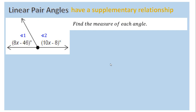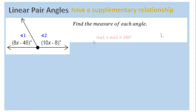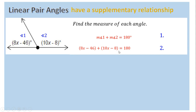Let's start with linear pair. Linear pair angles have a supplementary relationship. In this example, angle 1 is 8x minus 46, and angle 2 is 10x minus 8. The first thing you want to do is come up with the relationship — they add to 180 — so angle 1 plus angle 2 equals 180. Then use this relationship to set up your algebra equation by substituting the expressions in.